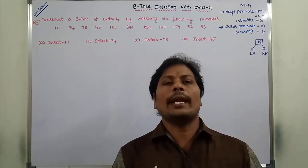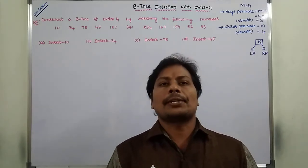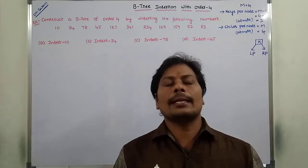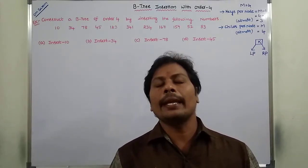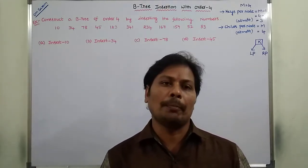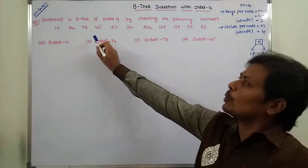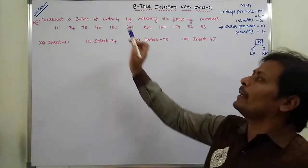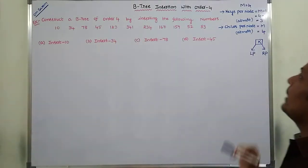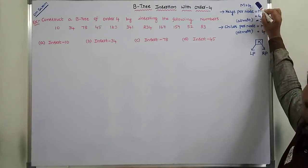Hi friends, today I am giving a lecture on B-tree insertion with order 4. So insertion of elements in a B-tree of order 4 will be discussed with one example problem. Order is denoted by capital M, so order 4 means M is equal to 4.